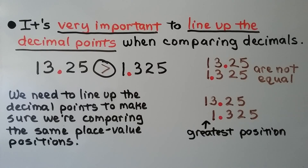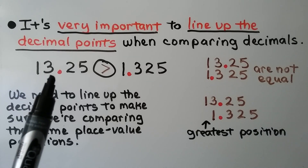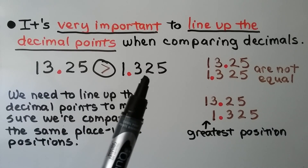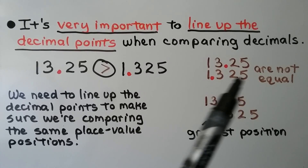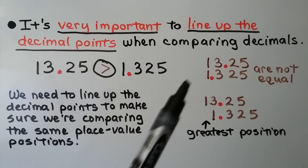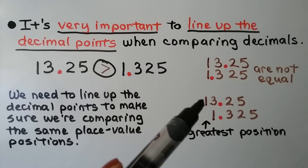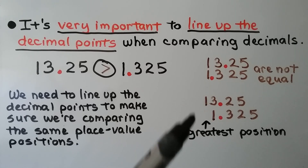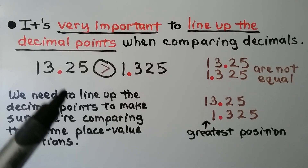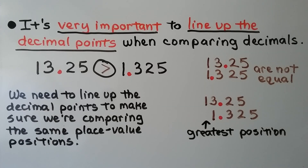It's very important to line up the decimal points when comparing decimals. We need to line up the decimal points to make sure we're comparing the same place value positions. If we compare two four-digit numbers and just line up their digits without aligning decimal points, we get the wrong result. Lining them up correctly, we see the tens place is the greatest position, so 13 and 25 hundredths is greater than 1 and 325 thousandths.